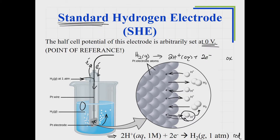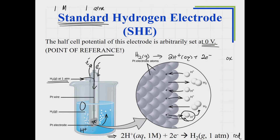Why 'standard'? Standard state conditions: if it's aqueous, it's one molar; if it's a gas, it's at one atmosphere. In the standard hydrogen electrode, the gas flows over the electrode at one atmosphere, and the H⁺ ions in solution are at one molar. Once those conditions are met, we have a standard hydrogen electrode.